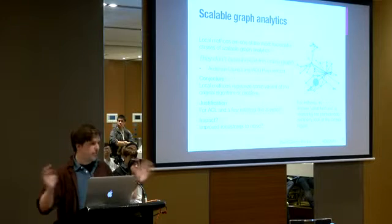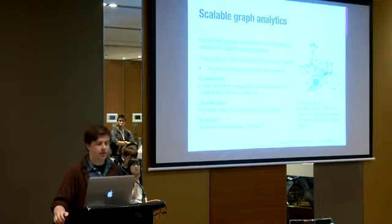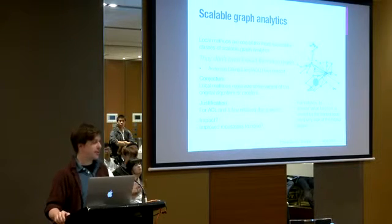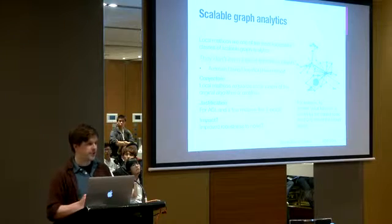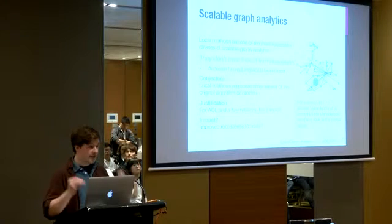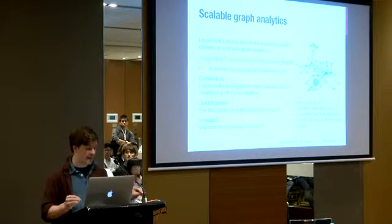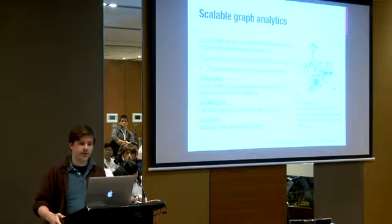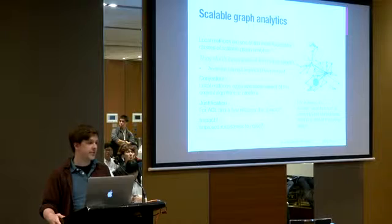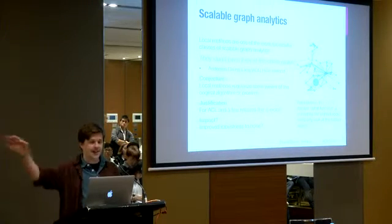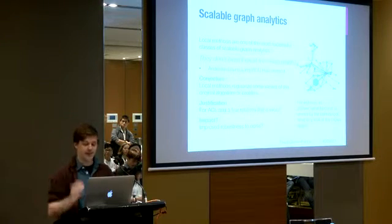Throwing a bold conjecture out there: these local methods all eventually regularize the original problem in some way. There's some type of regularization that must be applied in order to make it local in the graph. The idea of using these localized methods ought to be slightly more robust to noise in the graph construction. In some sense this is really interesting — because if you don't look at the entire graph, what happens far away can't possibly affect your local result.